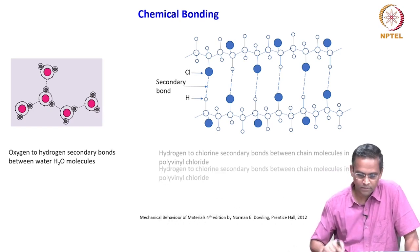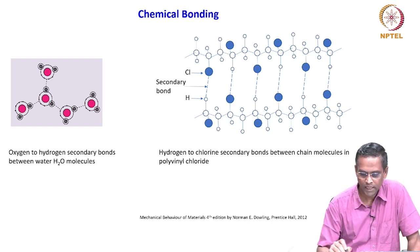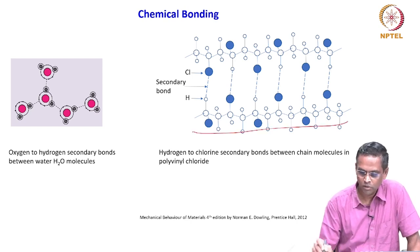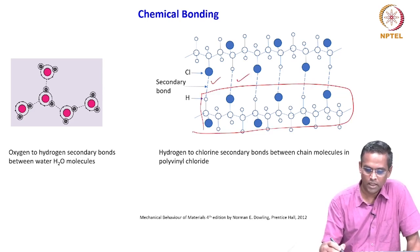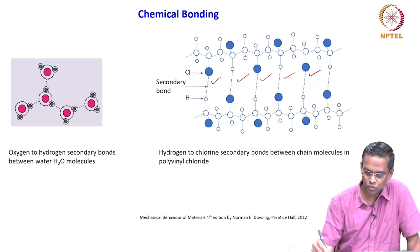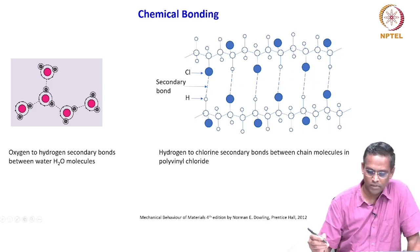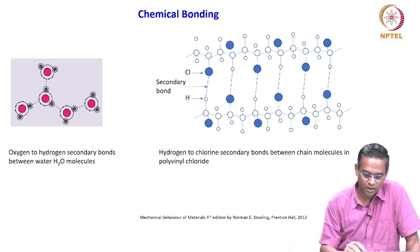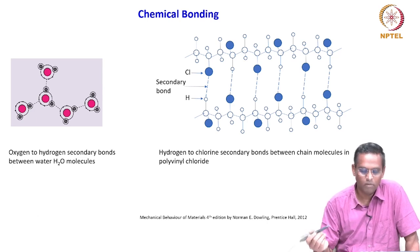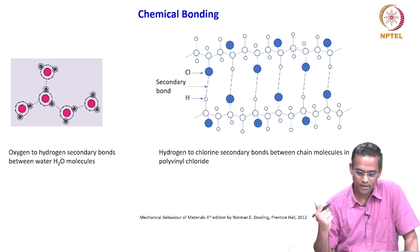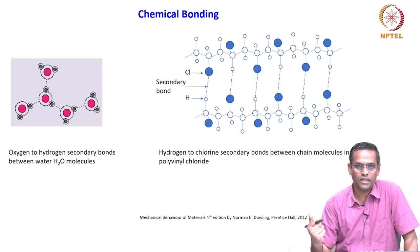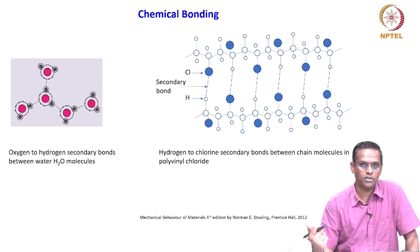If you look at hydrogen-to-chlorine secondary bonds between chain molecules in polyvinyl chloride — this is one unit and this is another unit, they are held together by this secondary bond between hydrogen and chlorine. All polymeric materials have chain molecules held together by Van der Waals forces or secondary bonds.